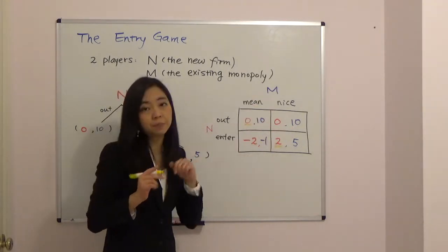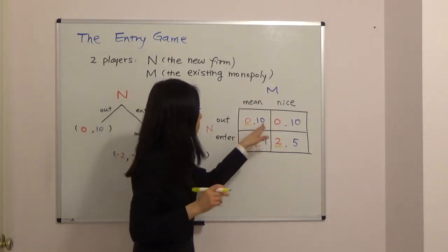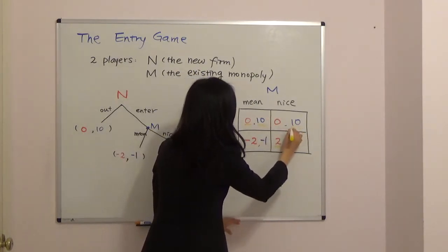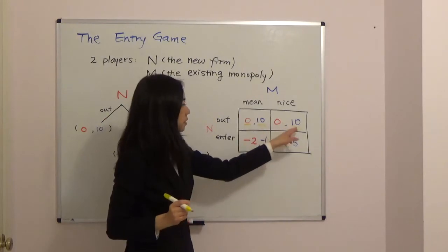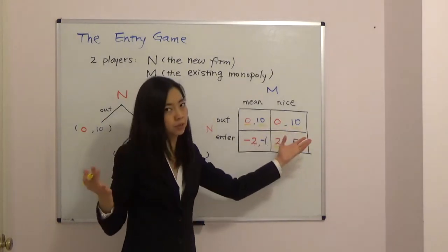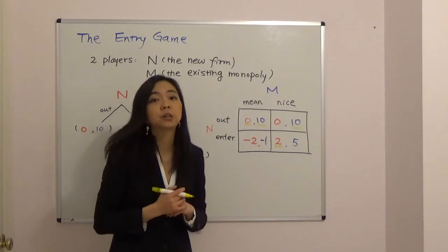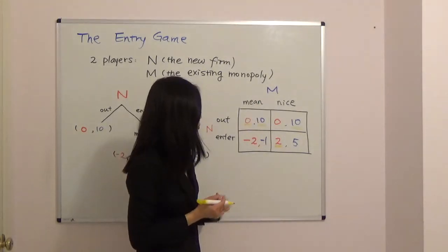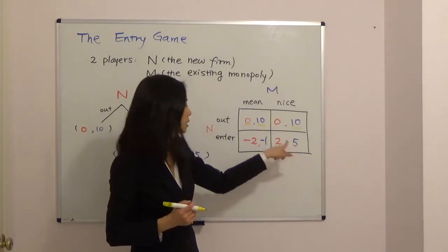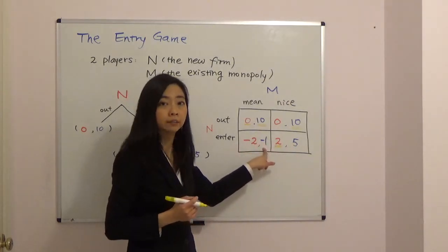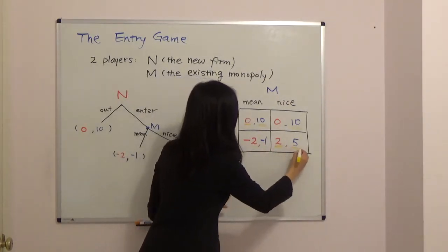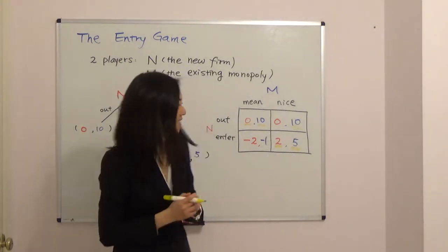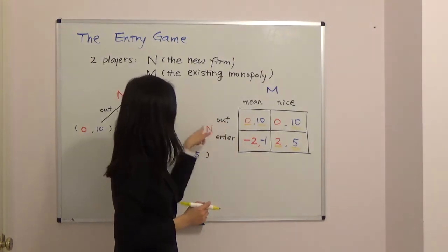Now, given that the new firm chooses to stay out, the monopoly is indifferent between being mean and being nice — ten is the same as ten, so no preference. Given that the new firm chooses to enter, the monopoly will choose to play nice because five is better than negative one. So we underline that best response.